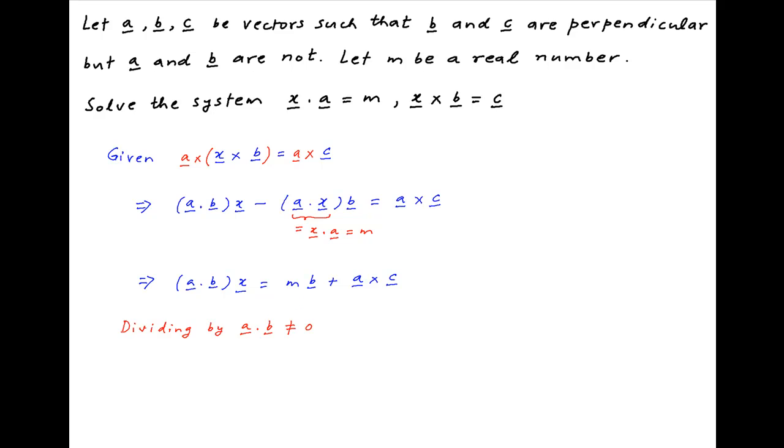Therefore we can divide the above equation by A dot B, which implies that vector X is equal to M times vector B divided by A dot B plus A cross C divided by A dot B. And this is the required solution.